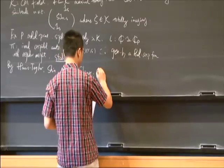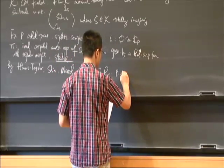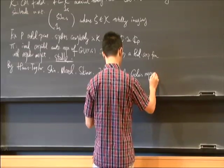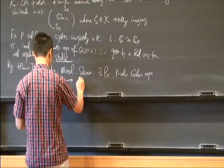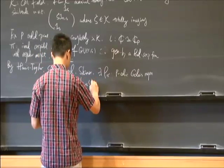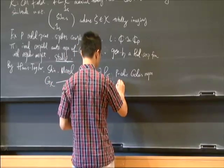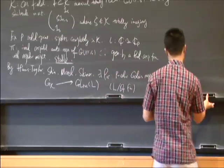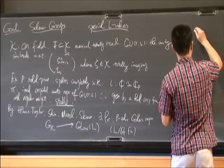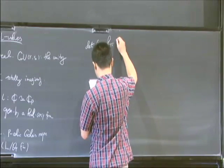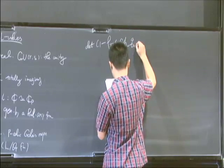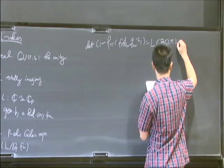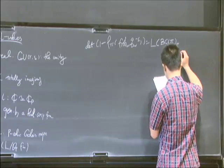There is a p-adic Galois representation from G_K, the absolute Galois group, to GL_{R+S}(O_L). Here L is some finite extension of Q_p which is characterized by the following formula.